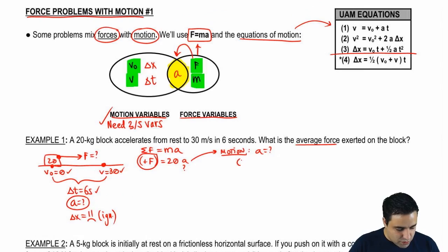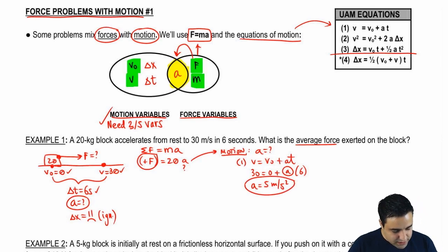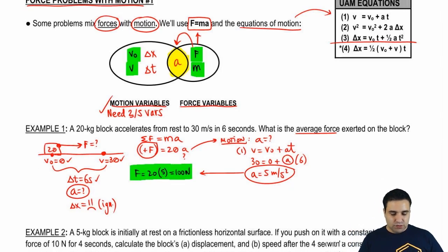The final velocity is 30, the initial velocity is zero. Acceleration is what I'm looking for, and time is six. If I move things around, it's 30 over six, or simply five meters per second squared. Now that I've got the acceleration, I can just go back in here. F equals 20A, or 20 times five. So the average force is 100, and that's the final answer. Let's do another one.